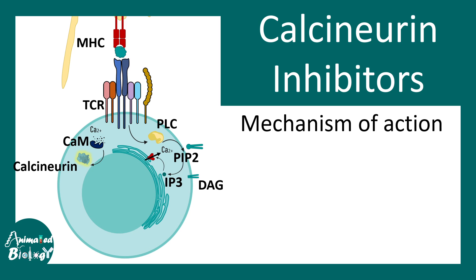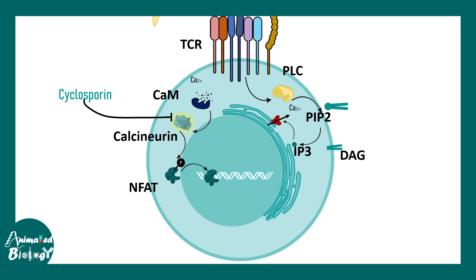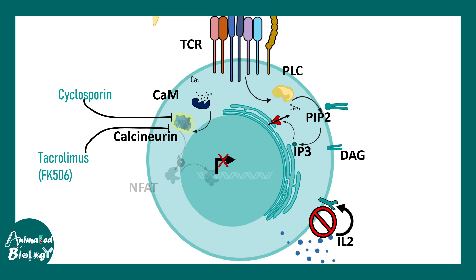T cell activation requires IL-2, and the transcription factor that produces IL-2 is NFAT. NFAT can only translocate into the nucleus when its phosphate group is removed by calcineurin. Once dephosphorylated, NFAT enters the nucleus, starts transcription of IL-2, and IL-2 is then sensed autocrinely by the T cell itself. Calcineurin inhibitors block calcineurin, so NFAT cannot be dephosphorylated, cannot enter the nucleus, and IL-2 transcription is abrogated — halting T cell activation.